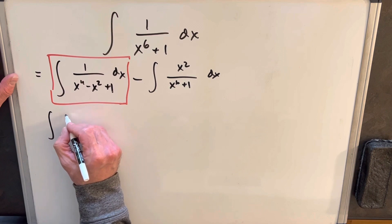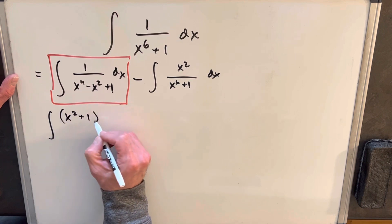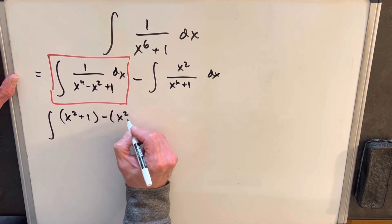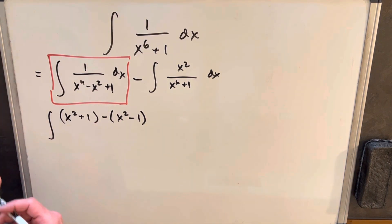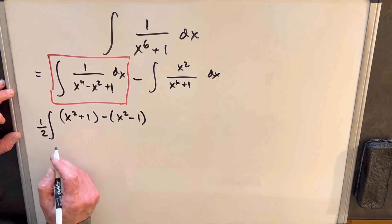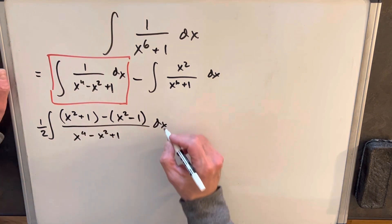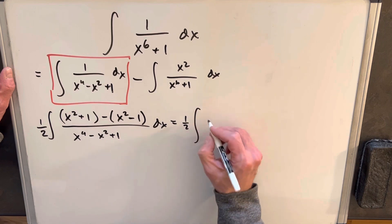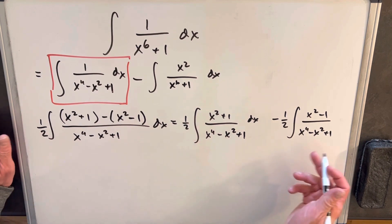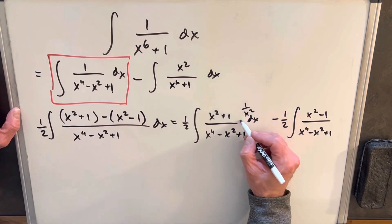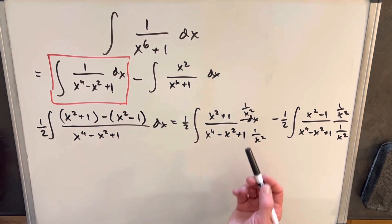Let's rewrite this. Same kind of thing — I want to create an x squared plus 1 to help out. What I'm going to do is subtract an x squared minus 1. But if you distribute the minus sign, we end up with a 2 in the numerator. We can't have that, so we multiply out front by a half — a half times the whole numerator is just 1. Then we split this into 2 integrals. There's a trick where we multiply numerator and denominator by 1 over x squared on both integrals.